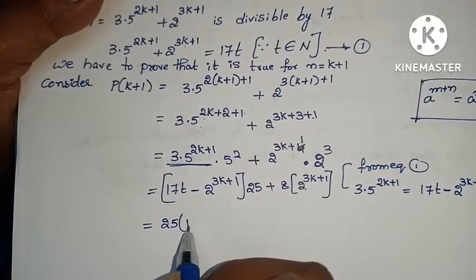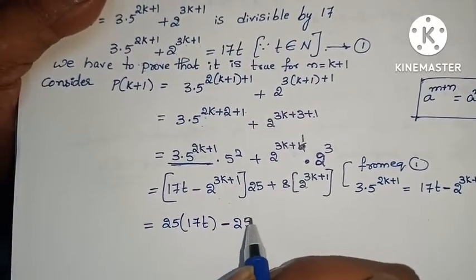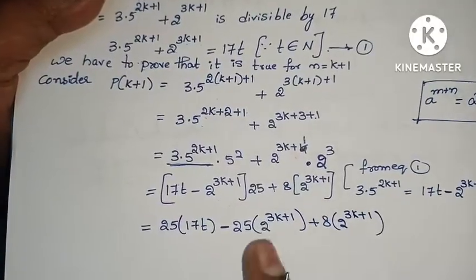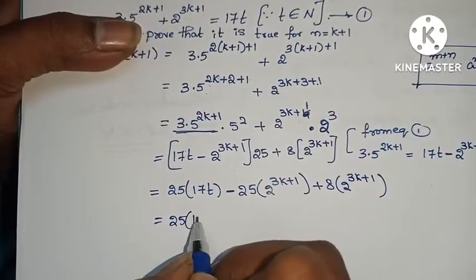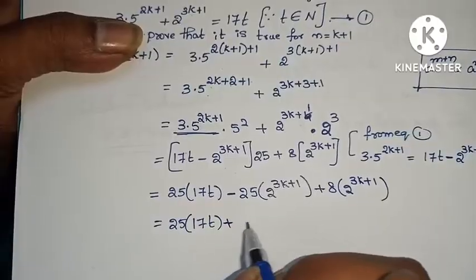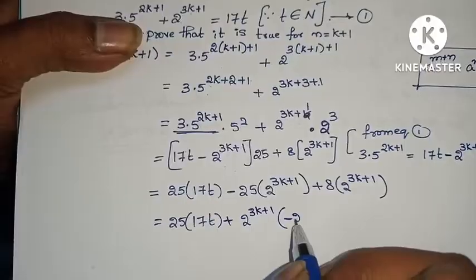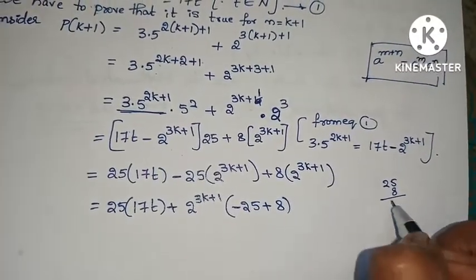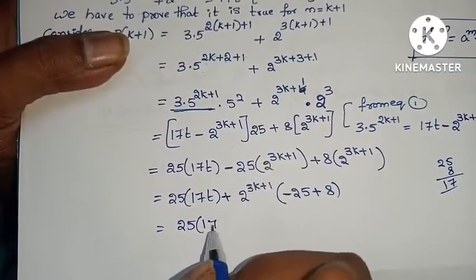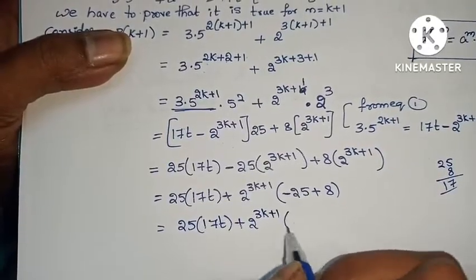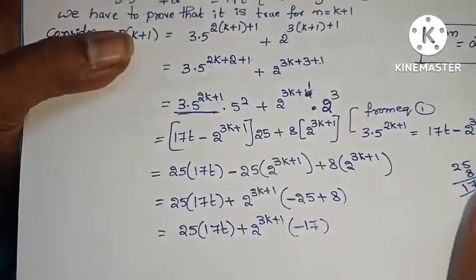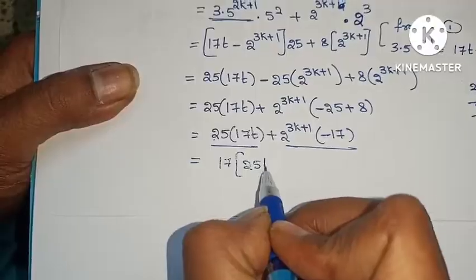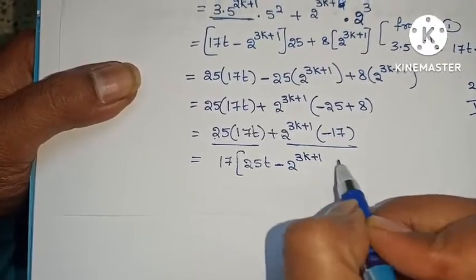Now taking 2 power 3k plus 1 as common: 25 into 17t minus 25 into 2 power 3k plus 1 plus 8 into 2 power 3k plus 1. This gives 25 into 17t plus 2 power 3k plus 1 into (minus 25 plus 8), which is minus 17. So the expression equals 25 into 17t plus 2 power 3k plus 1 into minus 17. Taking 17 as common: 17 into (25t minus 2 power 3k plus 1).